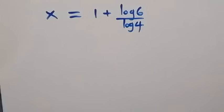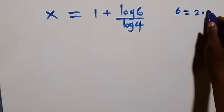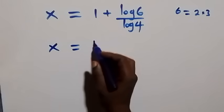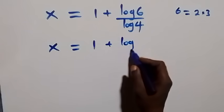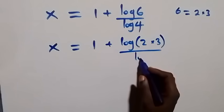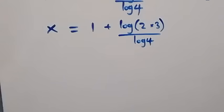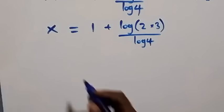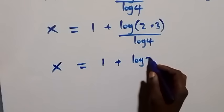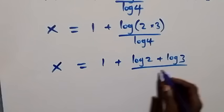We can also write 6 as 2 times 3. So what we have becomes x equals 1 plus log(2 times 3) over log 4. Applying the product law again, this becomes x equals 1 plus log 2 plus log 3, all over log 4.